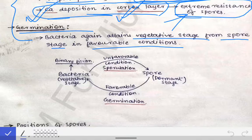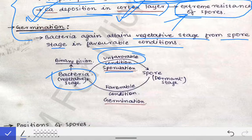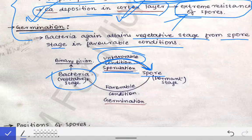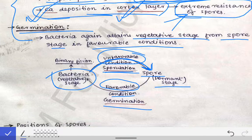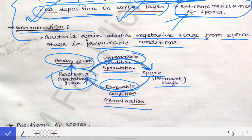The vegetative stage is the stage in which bacteria can multiply. In unfavorable conditions, the vegetative stage bacteria goes into the spore stage by the process of sporulation — a dormant stage with no multiplication or growth. When favorable conditions return, germination occurs and the spore transforms back into the vegetative stage, where binary fission — multiplication, metabolism, and growth — all resume.